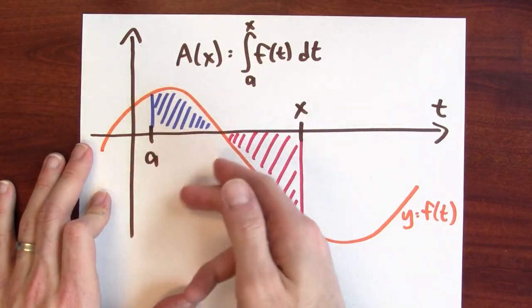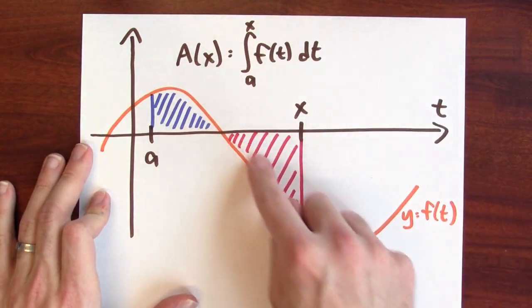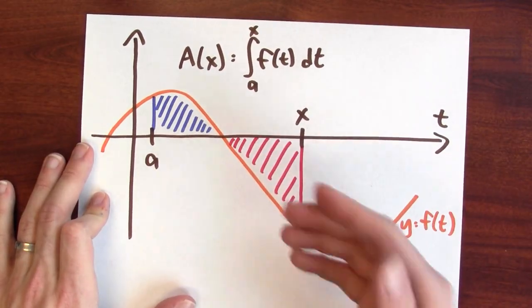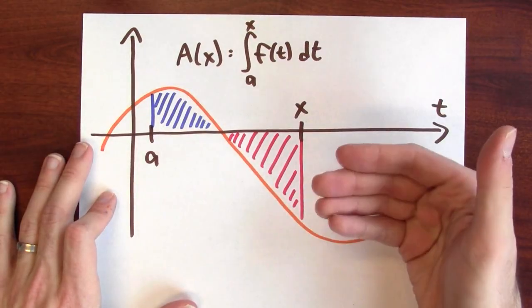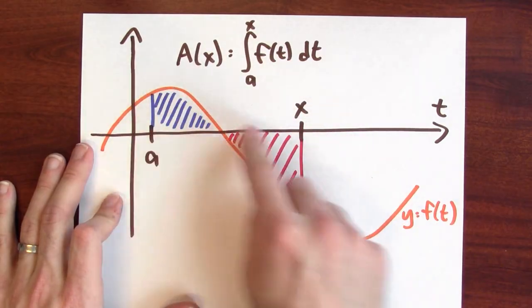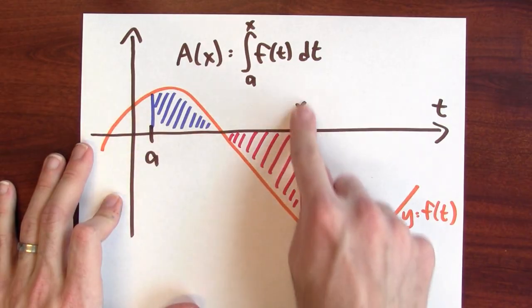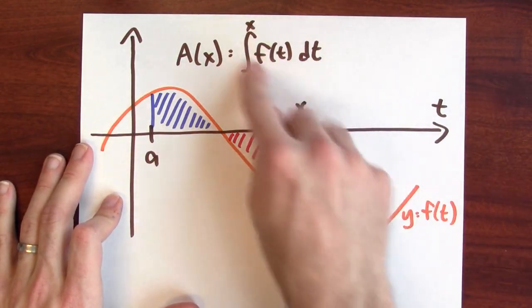So this area, which is above the axis here, is calculated as honest area. But this area here is really contributing negative area to the integral. I'm taking this area and I'm subtracting this area to figure out the integral from a to x. And it comes down to how this integral is defined.